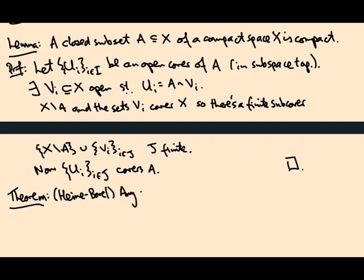This says any subspace of R^n, Euclidean space, is compact if and only if it's closed and bounded.